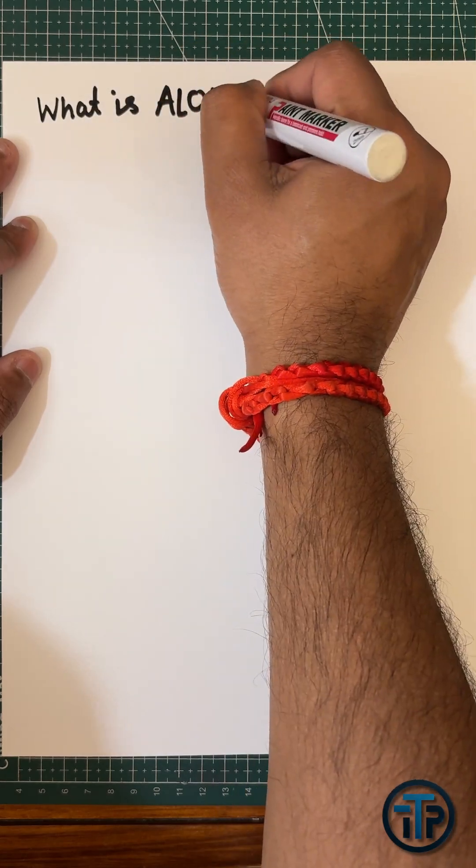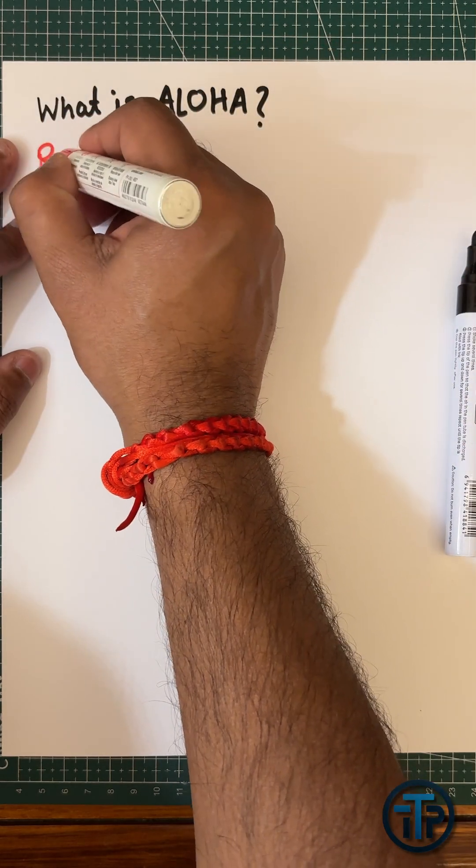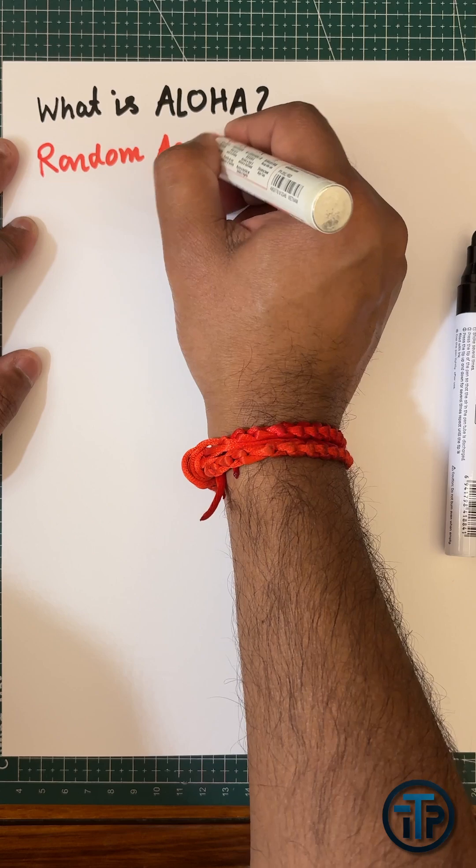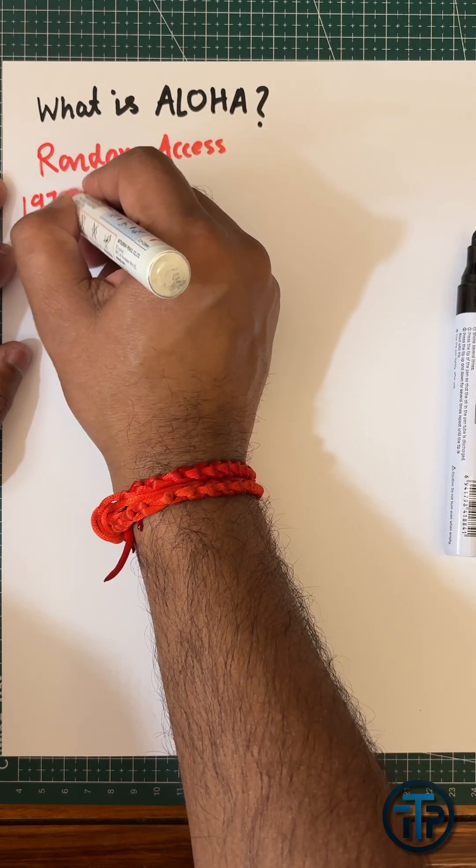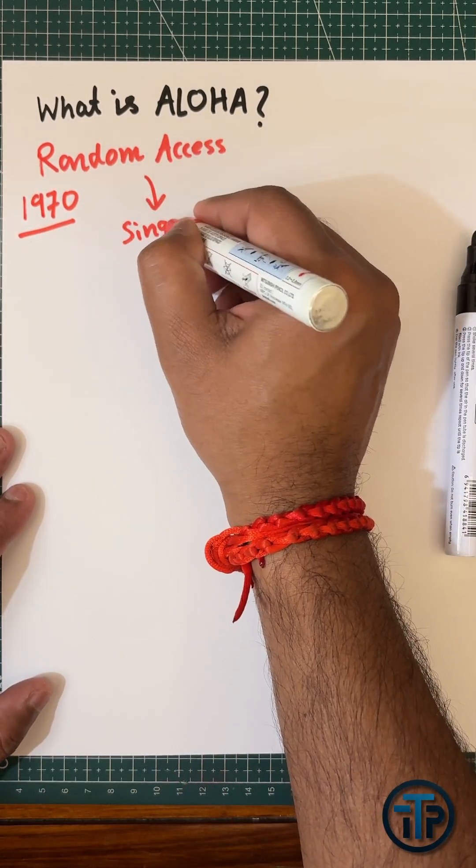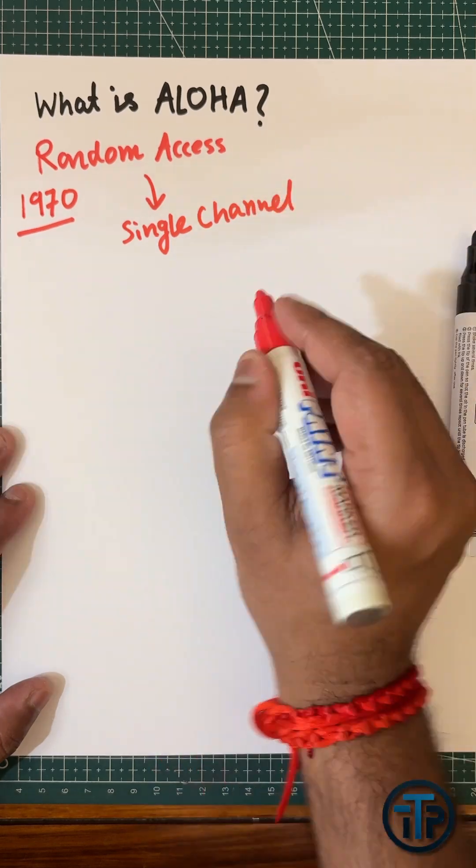What is ALOHA? ALOHA is one of the multiple access techniques, specifically a random multiple access protocol that was first discussed in 1970 by the University of Hawaii. So what is the meaning of